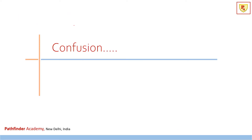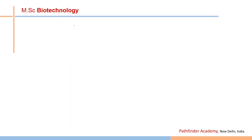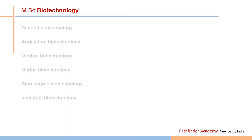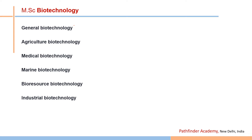Students sometimes get confused when exploring MSc Biotechnology options because of the variety of course names, such as general biotechnology, agriculture biotechnology, medical biotechnology, marine, bioresource, and industrial biotechnology. However, there is no big difference in the nature of the program at the MSc level, so you can choose according to your interest.